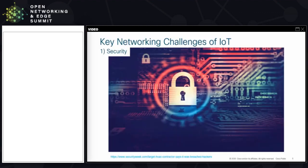The first and most important challenge is security. There have been countless examples where a compromised IoT system led to a much bigger incident. One of the most interesting cases is where Target got compromised — the intruders compromised the HVAC system, which then gave them access to more financial details from customers. There have also been examples where autonomous vehicles got hacked remotely, or manufacturers were held hostile with ransomware attacks. For most IoT use cases, security is the first question asked — is the solution secure?